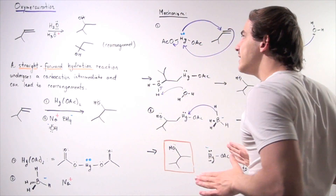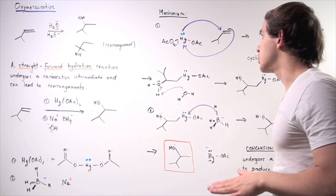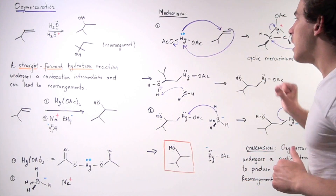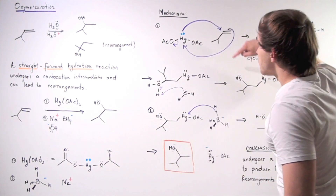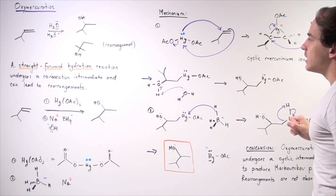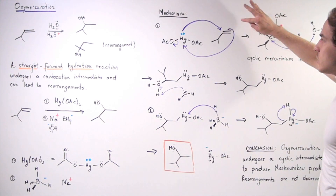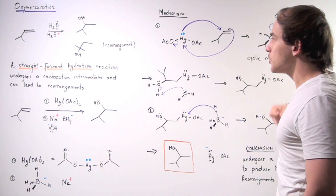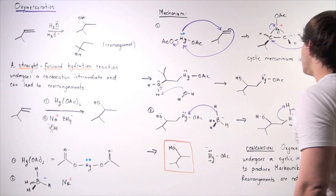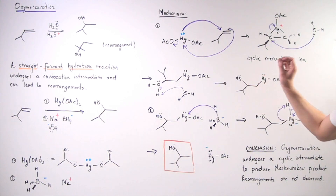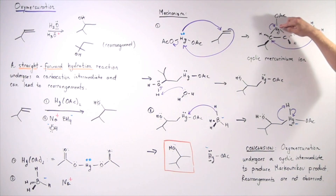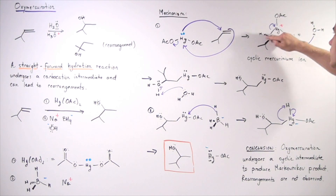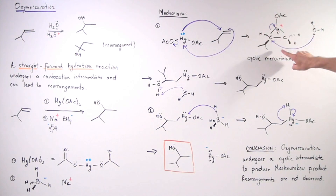Let's discuss the mechanism of the oxymercuration reaction. In the first step, the lone pair of electrons on mercury attacks one of the carbons. Simultaneously, the two electrons in the pi bond attack the mercury atom, displacing one of the acetate groups. This forms a cyclic intermediate where mercury now has a positive charge because it is bonded to three groups.